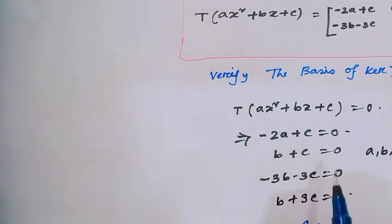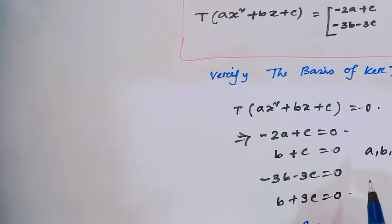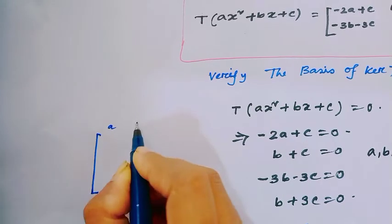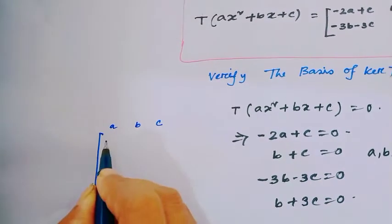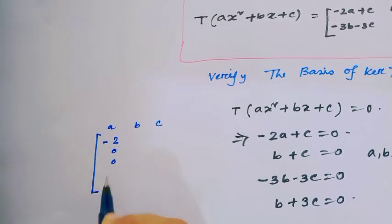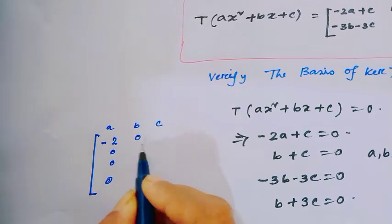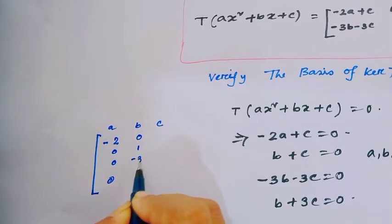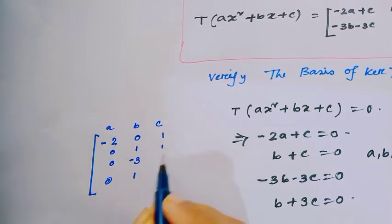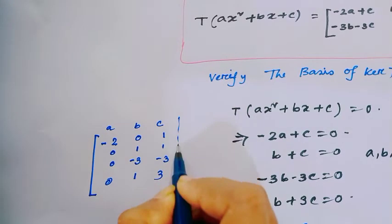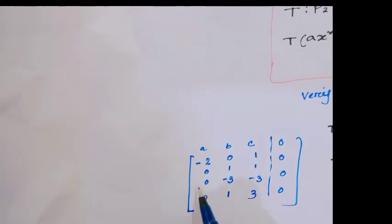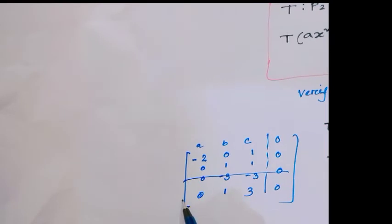To find kernel T by this method, write A, B, C as variables. The coefficient matrix is [−2, 0, 1; 0, 1, 1; 0, −3, −3; 0, 1, 3]. Notice the third and fourth rows are just multiples of the first two rows, so they are omitted. After row reduction, only two rows are pivoted, leaving C as a free variable.